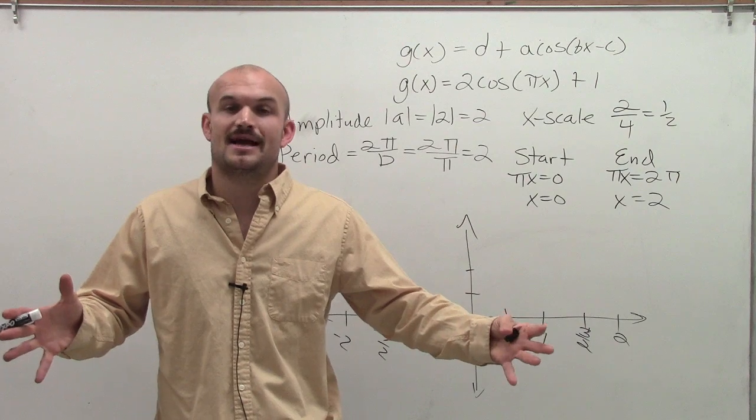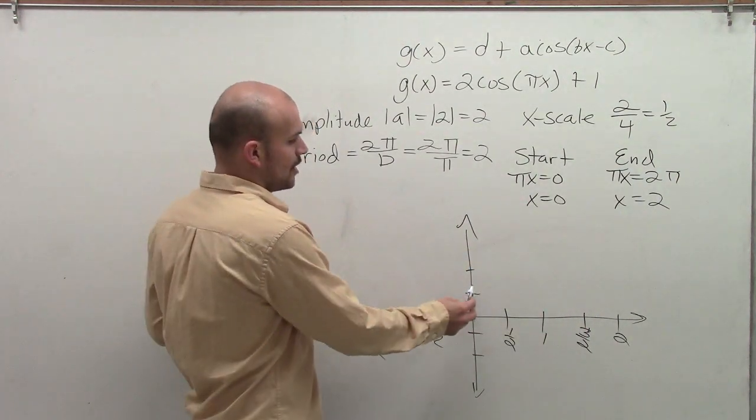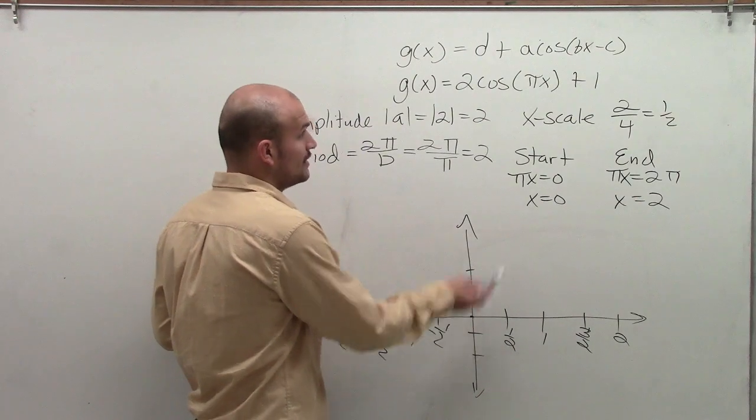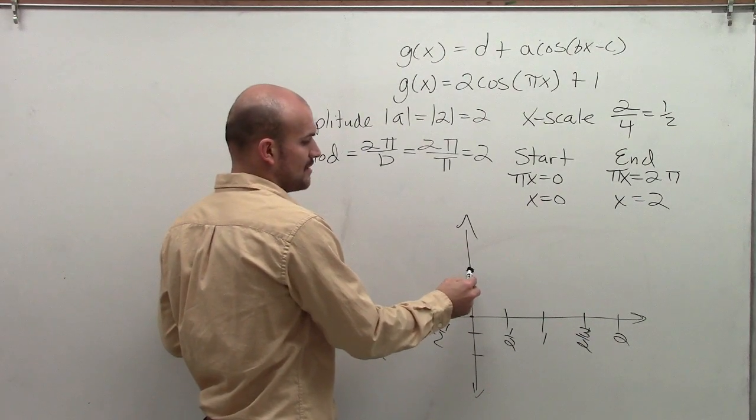And then simply just take all those points and shift them how they need to be. So remember, our parent graph would have an amplitude of 1. Since now we have an amplitude of 2, I'm going to start my graph at 2 comma 0.